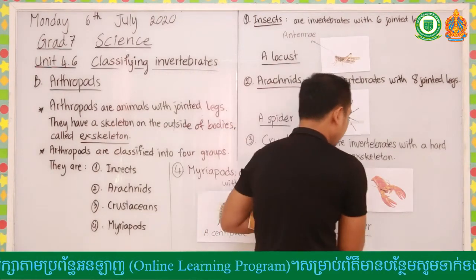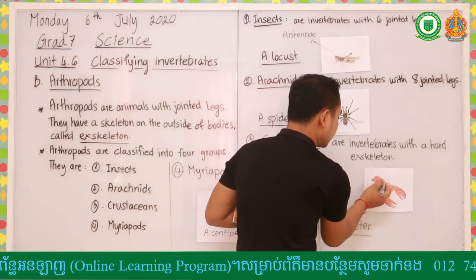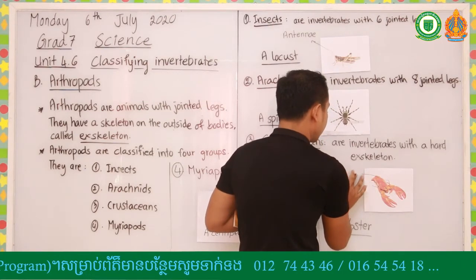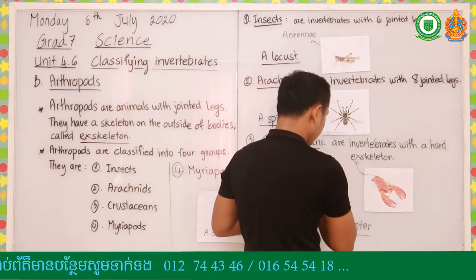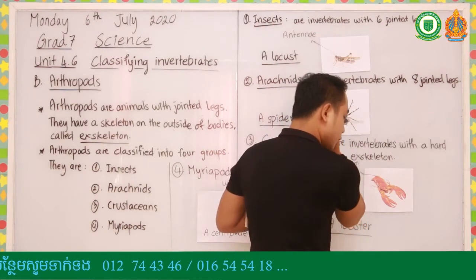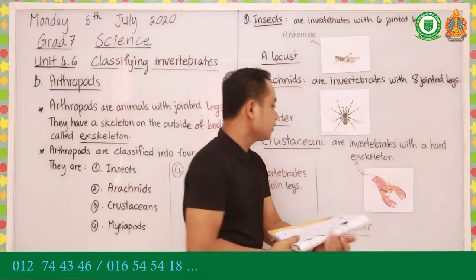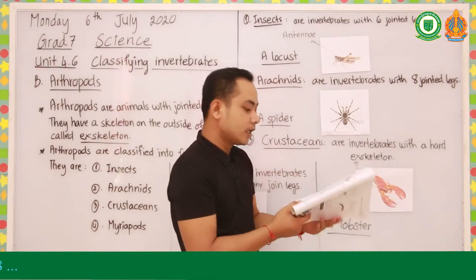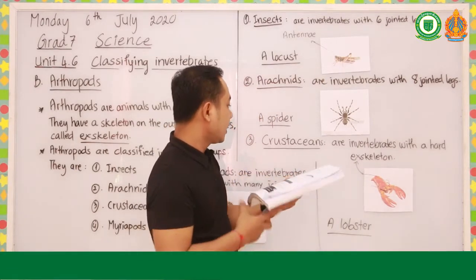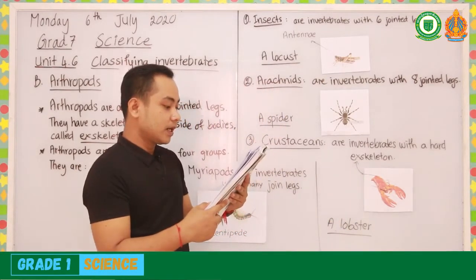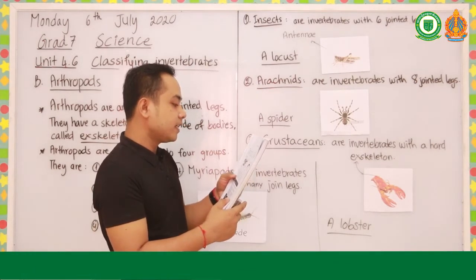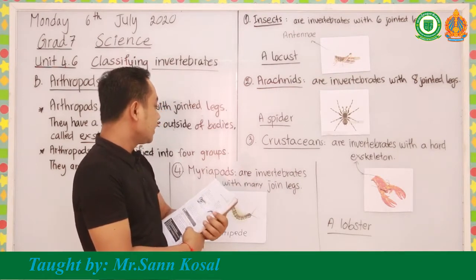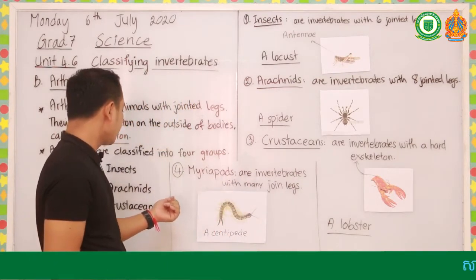Look at a lobster - it has an outside exoskeleton right here, and it has two pairs of antennae in front, and very big legs. We can also have other crustaceans like crabs, water fleas, and woodlice - they are all crustaceans. And another type of arthropod is myriapods.